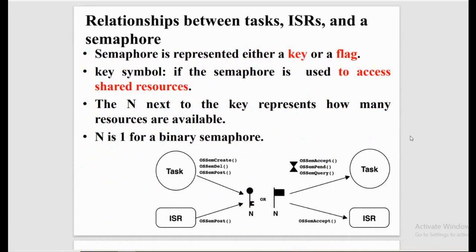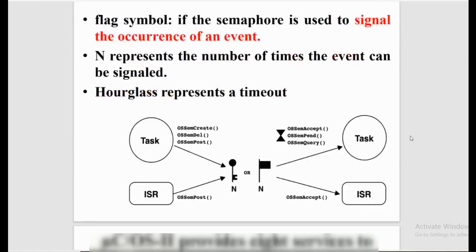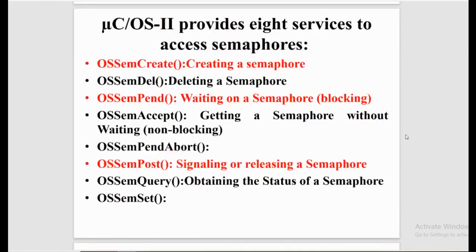The relationship between tasks, interrupt service routines, and a semaphore is shown symbolically. Semaphore is represented either as a key or a flag. If the semaphore is used to access shared resources, it is shown as a key symbol. The capital N next to the key represents how many resources are available — for binary semaphore, N is 1. If the semaphore is used to signal an event, it is represented with a flag symbol, and N tells us how many times the event can be signaled. The hourglass in the figure represents a timeout.